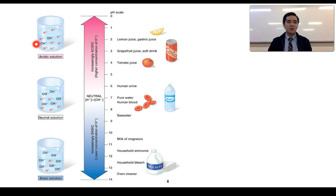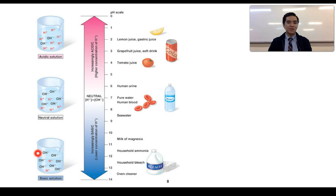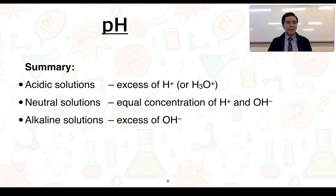For a basic solution, increasing the concentration of OH⁻ ions effectively lowers the concentration of H⁺ through reaction to produce water, giving an increase in OH⁻ and a decrease in H⁺. To summarize: acidic solutions have an excess of H⁺ or H₃O⁺ compared to hydroxide; neutral solutions have equal concentrations; and alkaline solutions have an excess of OH⁻ compared to H⁺.